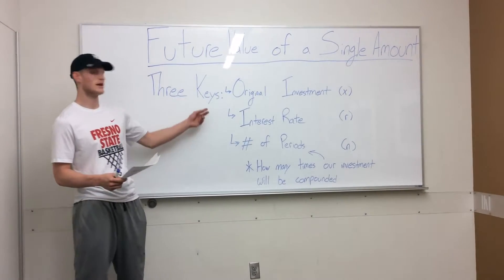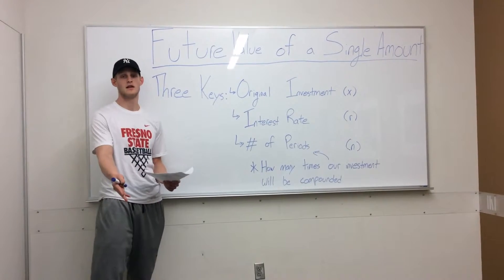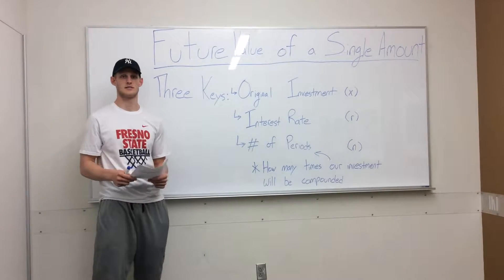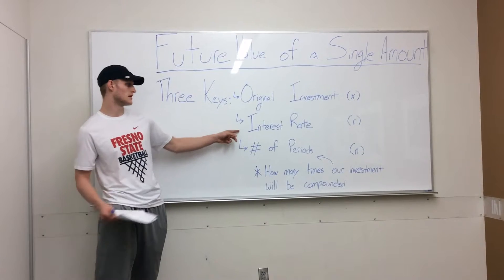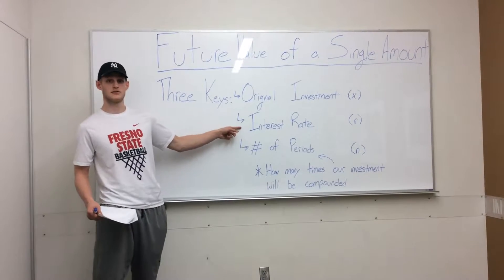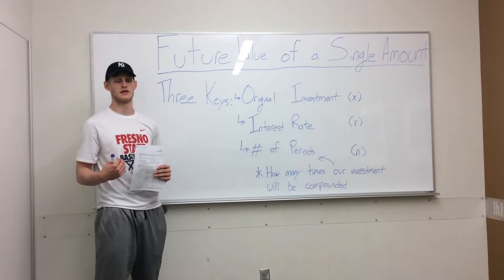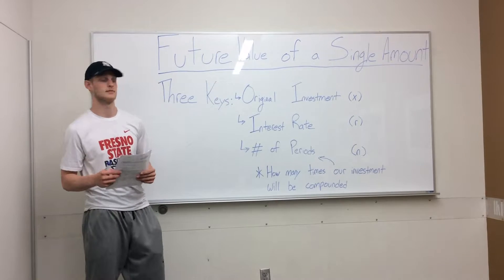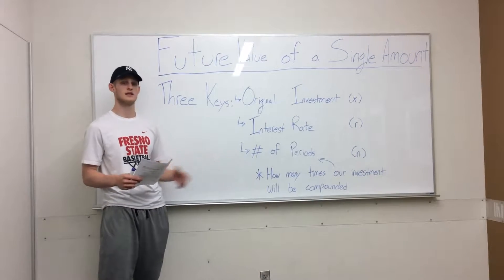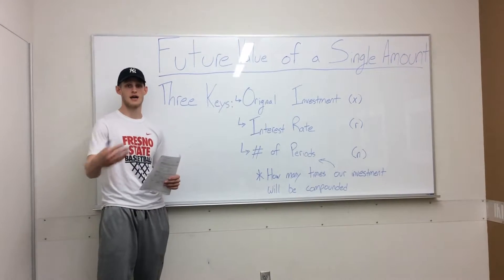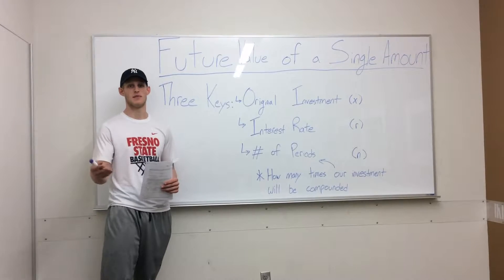The first thing you need is the original investment — how much are you going to put into your original investment, denoted as X. The second thing you need to know is your interest rate — how much do you expect to get back on your initial investment. The last thing you need to know is the number of periods — how many times will your money be compounded?